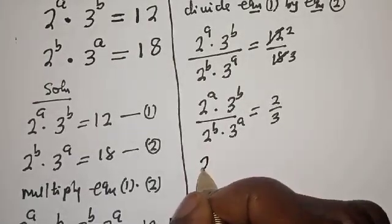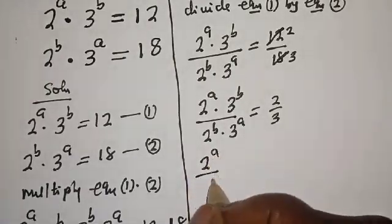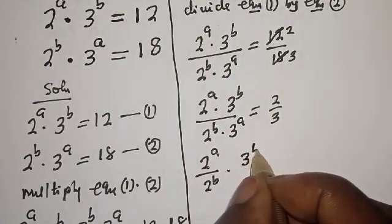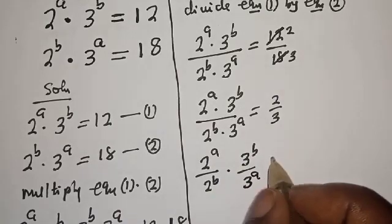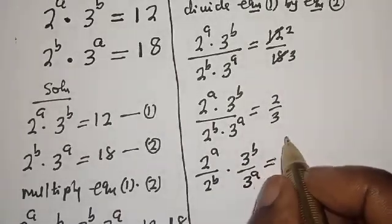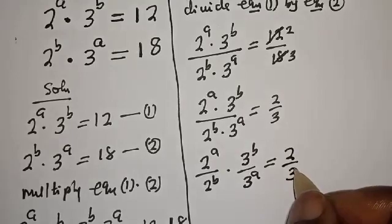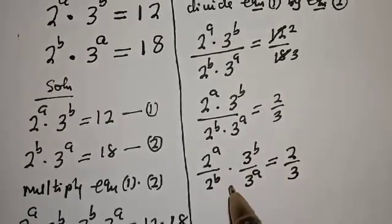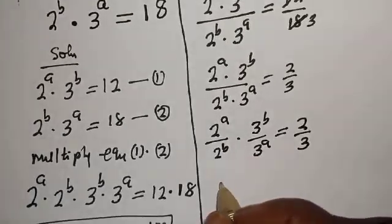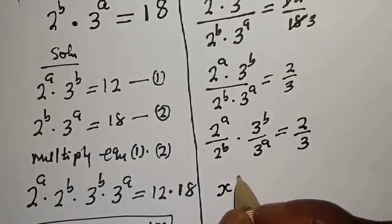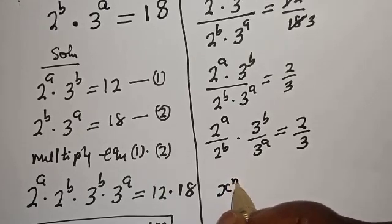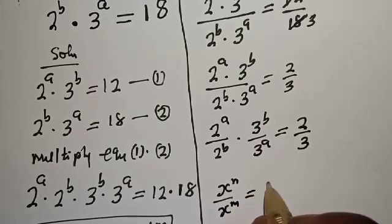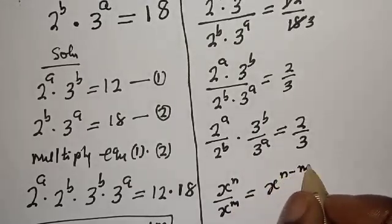Let's split this as: 2 raised to power a over 2 raised to power b, multiplied by 3 raised to power b over 3 raised to power a, equals 2 over 3. Take note of the rule: s raised to power n over s raised to power m equals s raised to power n minus m.